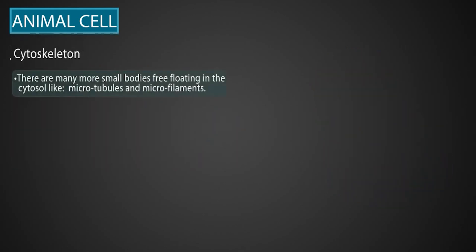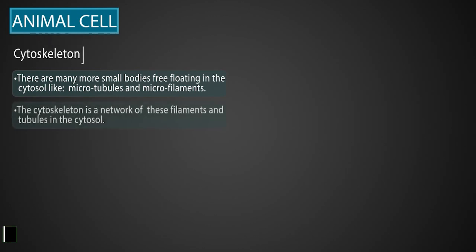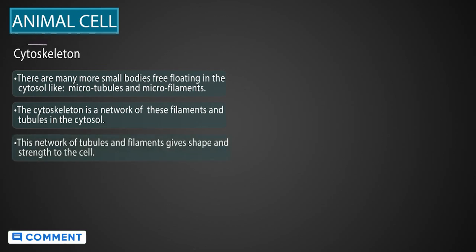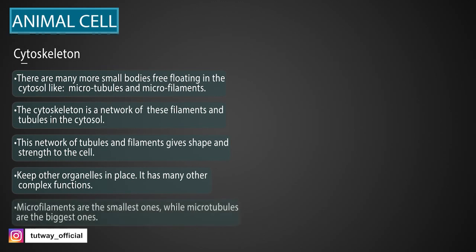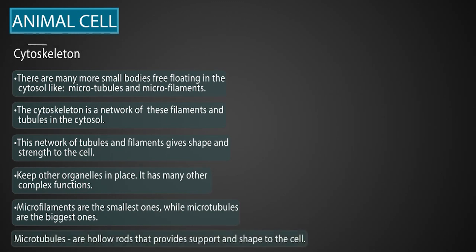There are many more small bodies free-floating in the cytoplasm, like microtubules and microfilaments. The cytoskeleton is a network of these filaments and tubules in the cytosol. This network of tubules and filaments gives shape and strength to the cell. It also keeps other organelles in place, and has many other complex functions too. Microfilaments are the smallest ones, while microtubules are the biggest ones. Microtubules are hollow rods that provide support and shape to the cell.